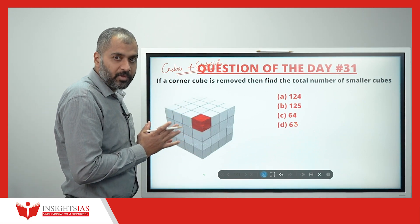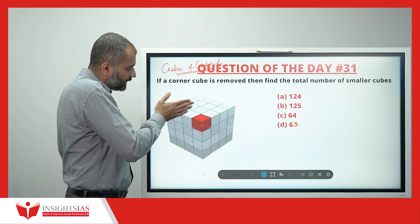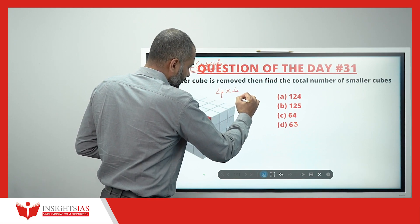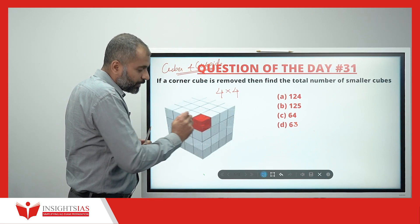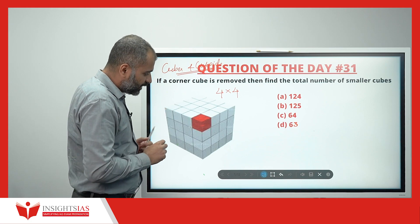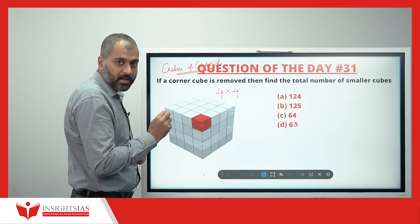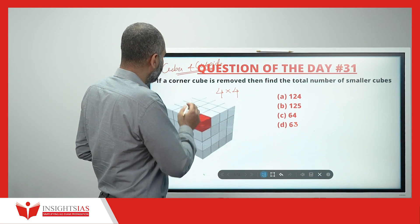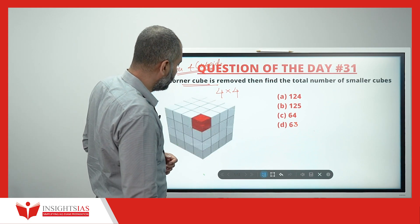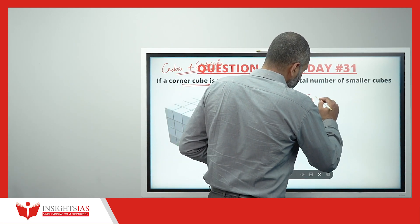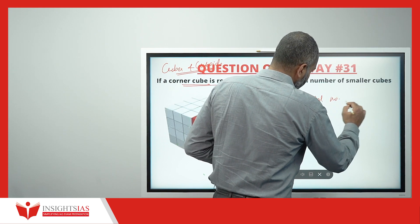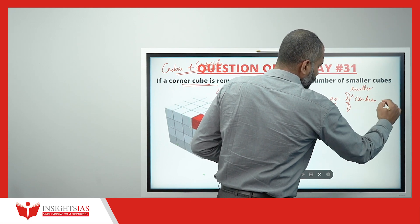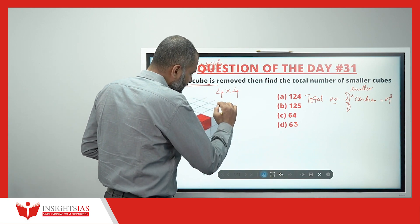I have taken one solid cube and cut it into different cross sections, and it has become 4×4×4 — each smaller part is also a cube. If I remove this corner cube, how many remaining cubes are there? The total number of smaller cubes is always n³.